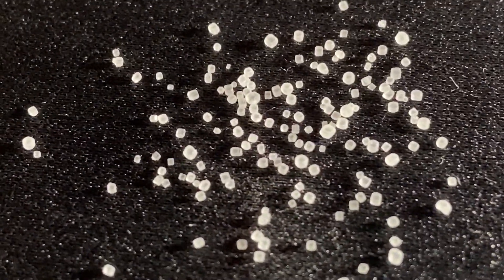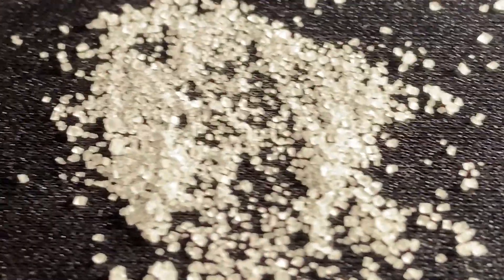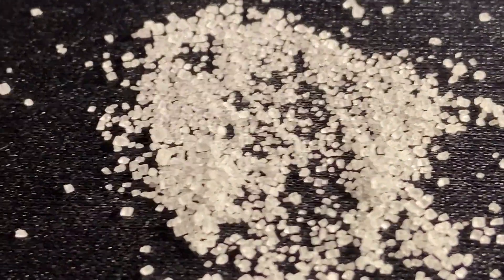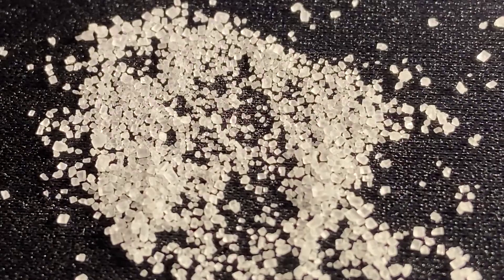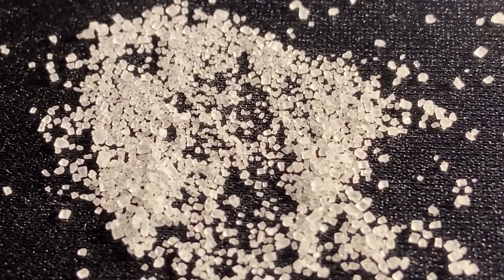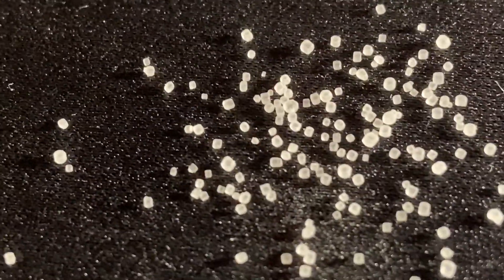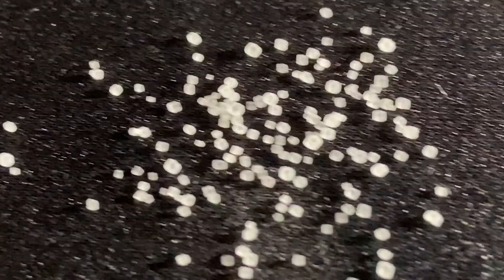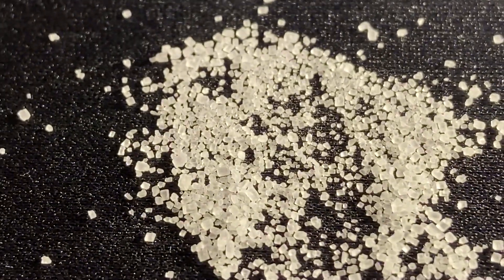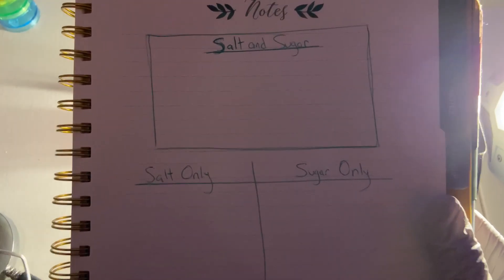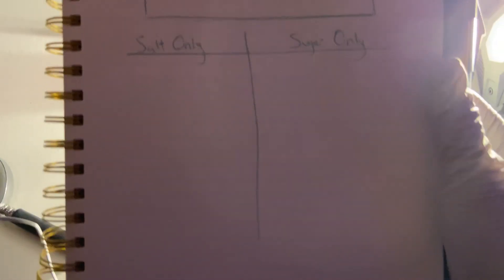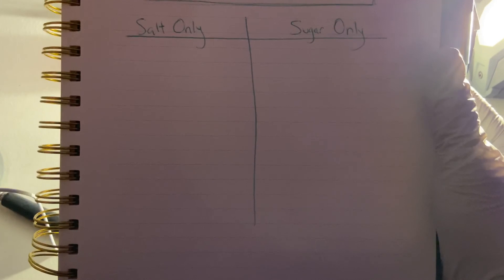Recap: this is salt, this is sugar. Pause this video to observe the different shapes. Which one's larger? Which one's smaller? Write the similarities in the box for sight and the differences in the T-chart for sight.